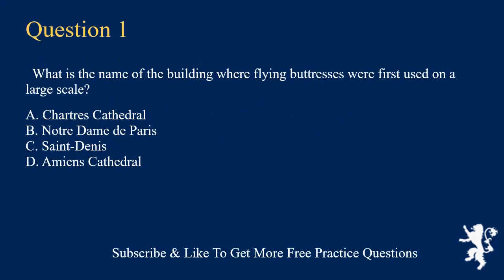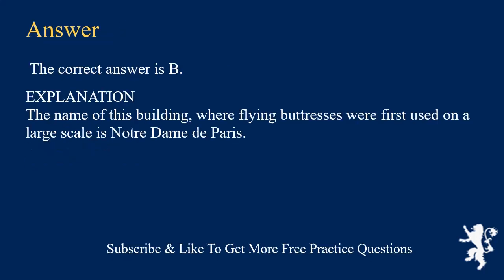What is the name of the building where flying buttresses were first used on a large scale? A. Chartres Cathedral. B. Notre Dame de Paris. C. Saint-Denis. D. Amyon Cathedral. The correct answer is B.